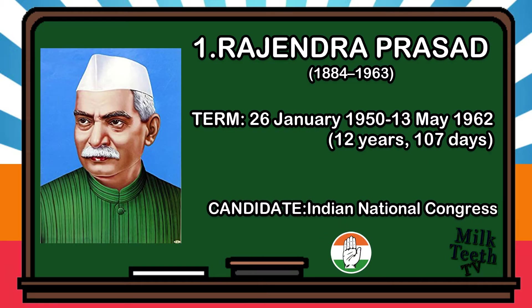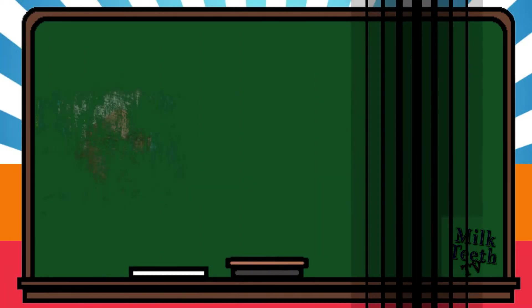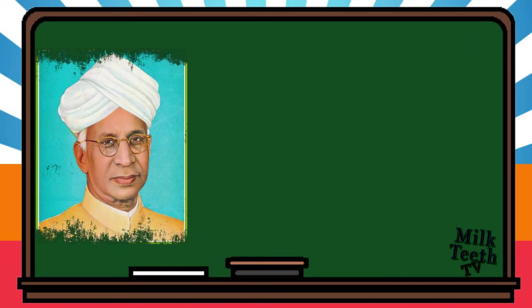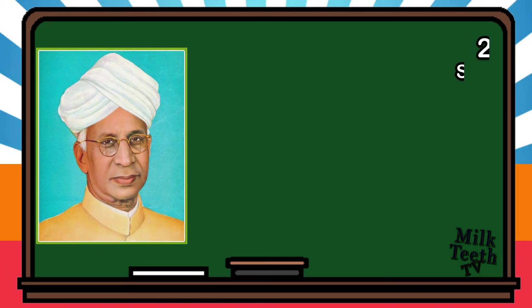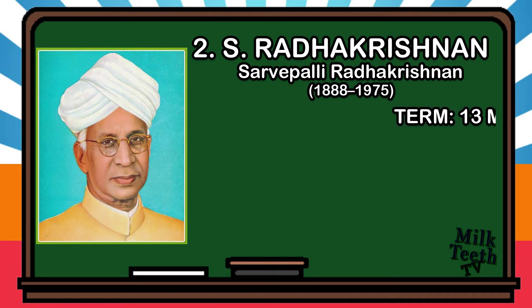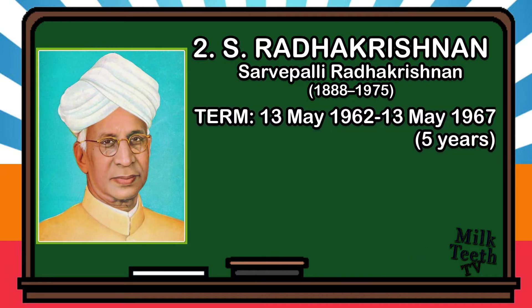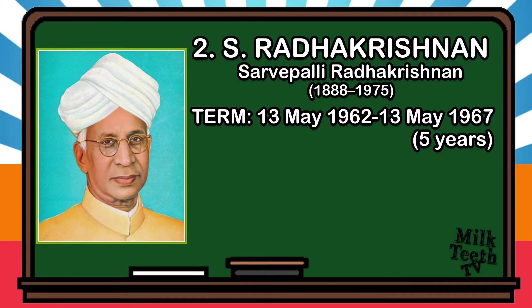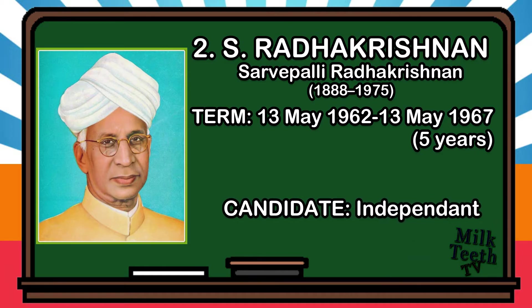Second President of India: Sarvapalli Radhakrishnan. He was born on 5th September 1888 and was an Indian philosopher and statesman. He became the second president of India on 13th May 1962 and served till 13th May 1967, for five years. He is also the first Vice President of India, and we celebrate Teachers' Day on his birthday every year.